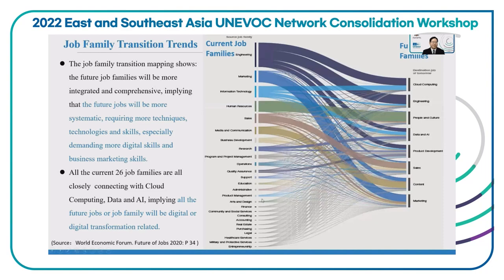Now let's see the job family transition trends. Currently we have 26 job families. In the future, we will only have eight job families. These trends show that future jobs will be more systematic, requiring more techniques, technologies, and skills — especially demanding more digital skills and business marketing skills.